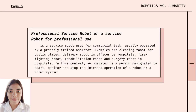Another category is the Professional Service Robot, a service robot used for commercial tasks, usually operated by a properly trained operator. These robots are mainly used for commercial purposes and for performing activities which involve dangerous tasks. They are operated by professionally trained operators who are dependent on the overall efficient functioning of these robots. Examples include Cleaning Robot for Public Places, Delivery Robot in Offices or Hospitals, Firefighting Robot, Rehabilitation Robot, and Surgery Robot in Hospitals.